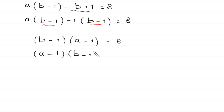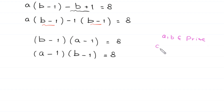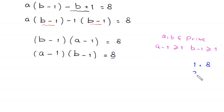We can rewrite this as (a minus 1)(b minus 1) equals 8, where both a and b are prime numbers. Since a and b are prime, (a minus 1) must be at least 1 and (b minus 1) must be at least 1. We can factorize 8 as 1 times 8 or 2 times 4, giving us two cases.